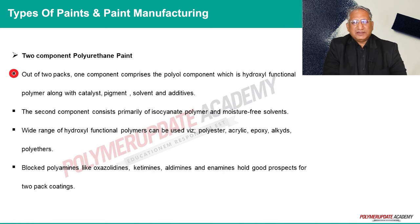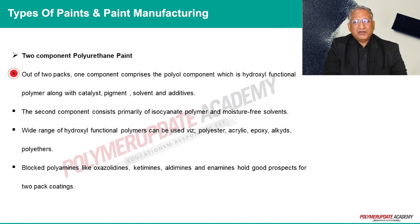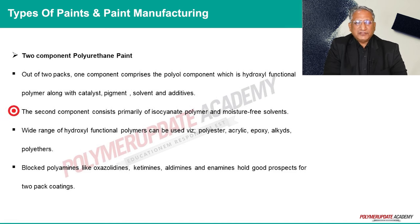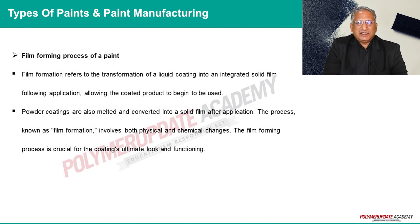Two-component polyurethane paint: one component comprises the polyol component, which is a hydroxyl-functional polymer along with catalyst, pigment, solvent, and additives, while the second component is essentially an isocyanate polymer along with moisture-free solvent.